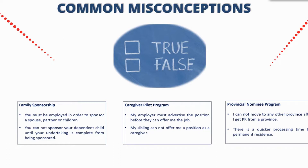One disclaimer: some programs — particularly business or investment type streams — do require you to remain within that province for a certain period after receiving permanent residence. But if it is not stipulated ahead of time, then it is not a requirement. Feel free to move if you need to. Regarding processing time: there is a quicker processing time for permanent residency through the provincial nominee — this is partially true. It depends on how quickly the province issues the nomination certificate, which can range from three weeks to six months. The federal processing time itself generally remains the same.